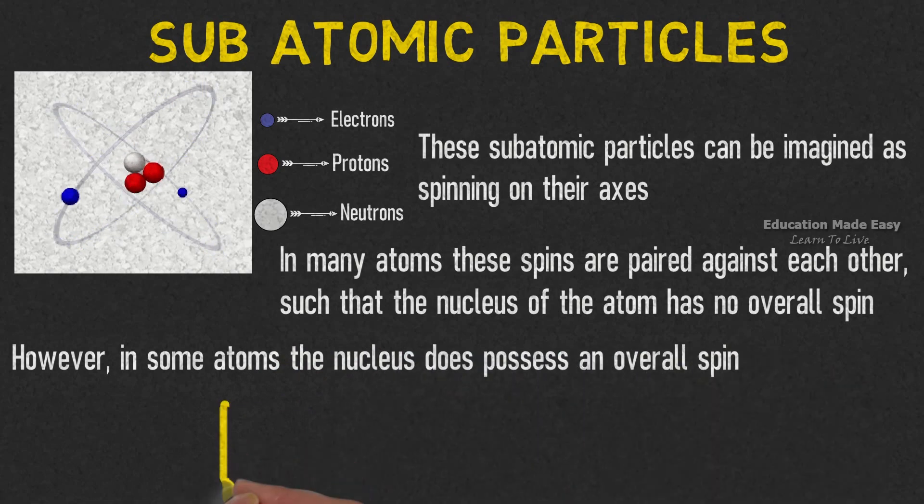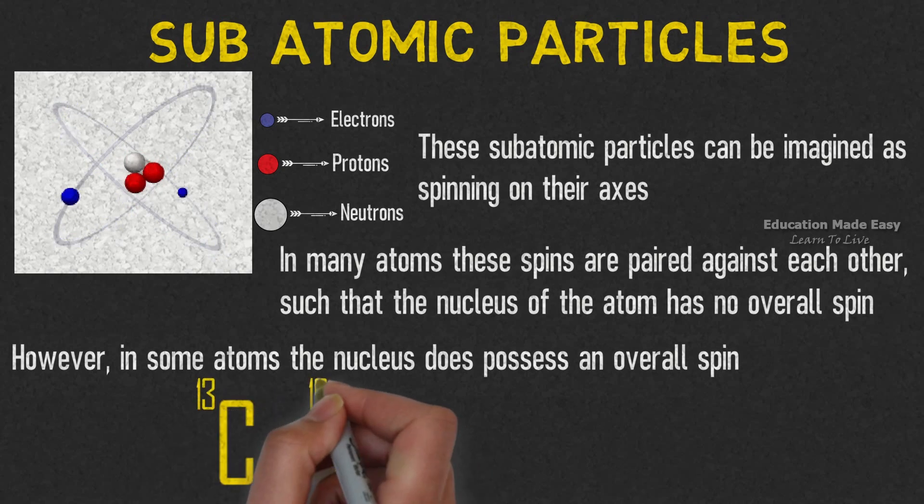Examples of such atoms are isotope of carbon, C13, isotope of fluorine, F19.